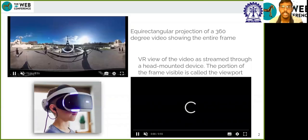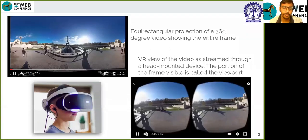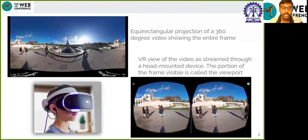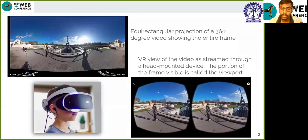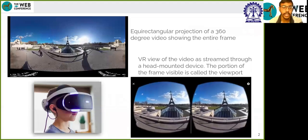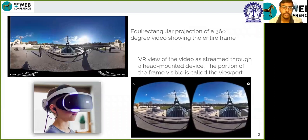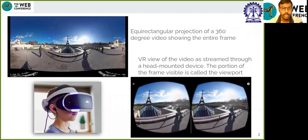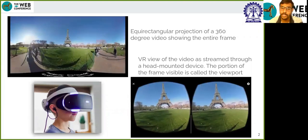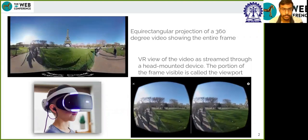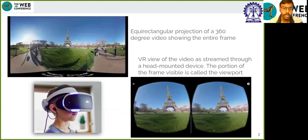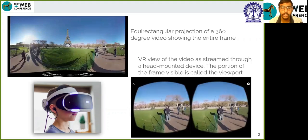The first question that comes to our mind is: what is a 360-degree video? As shown in the video clip on the top left corner, it can capture the view in every direction at the same time. The clip shows an equirectangular projection of the video where we can see the entire frame having an omnidirectional view of the scene. However, only a portion of the entire frame is visible, which is called the viewport.